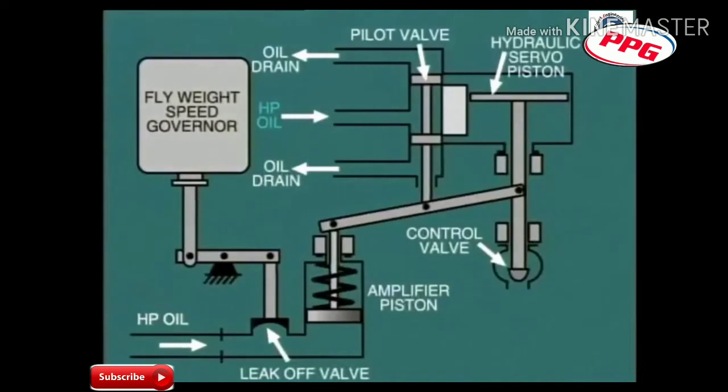In this arrangement, we have high-pressure oil above and below the piston. Now, when the position of the governor spindle changes, say for an increase in speed,